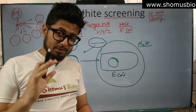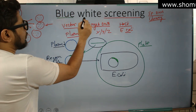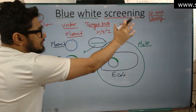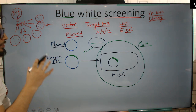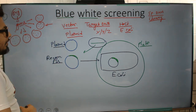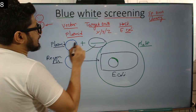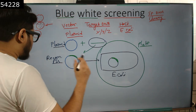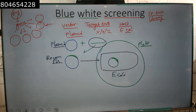Now, the most important thing is: what is this blue-white screening? Remember, we are sticking to this idea — what do the terms blue and white signify? During the process of recombination or molecular cloning, when we allow the plasmid to be fused with the target DNA, there are three different possibilities.